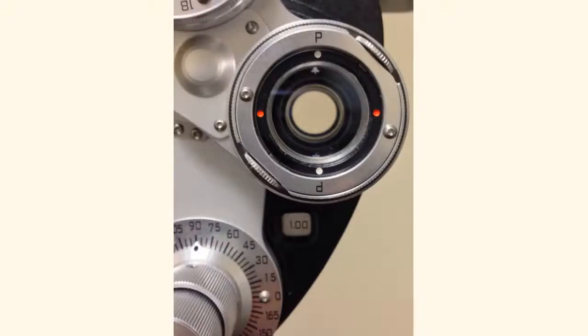Where we started with this particular patient, we started at a cylinder power of a plus one. And if they choose the option where the white dots are below the P's, we're going to rotate the cylinder power dial so that the cylinder power is now 1.25.